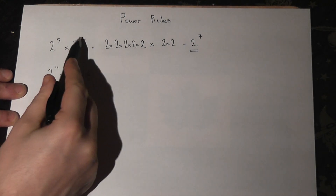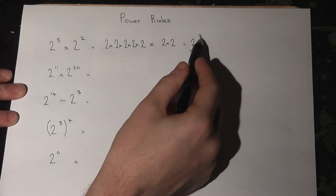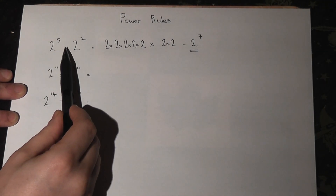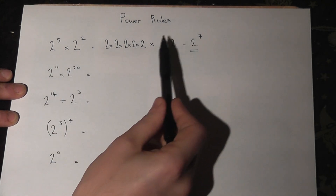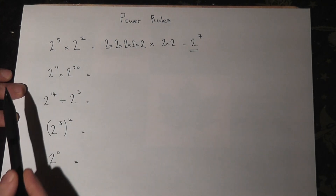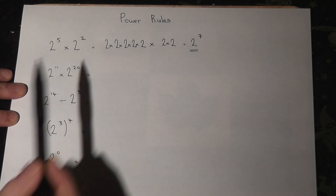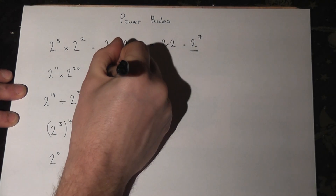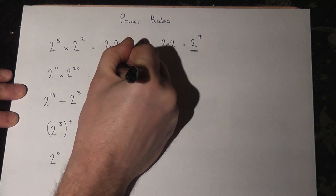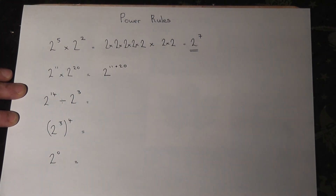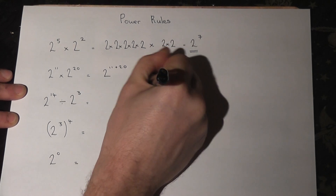There are 5 there, there are 2 more, and 5 and 2 is 7. So when you multiply together 2 numbers with powers, you add the powers. For example, 2 to the power of 11 times 2 to the power of 20 — the shortcut is to do 11 plus 20, which just equals 2 to the power of 31.